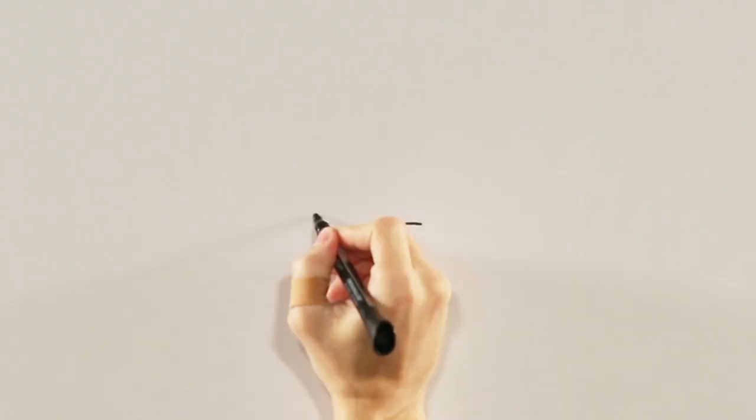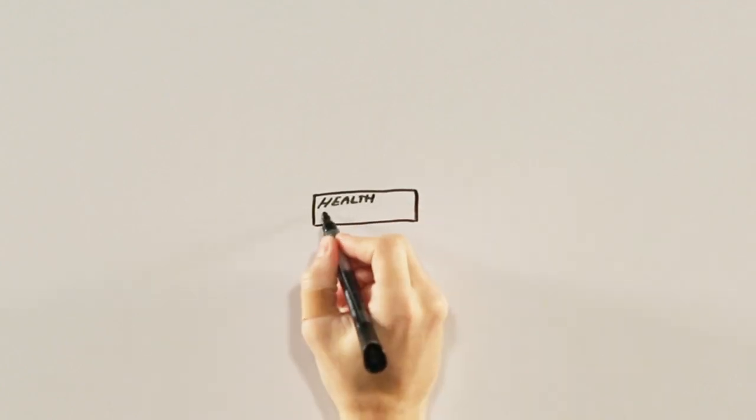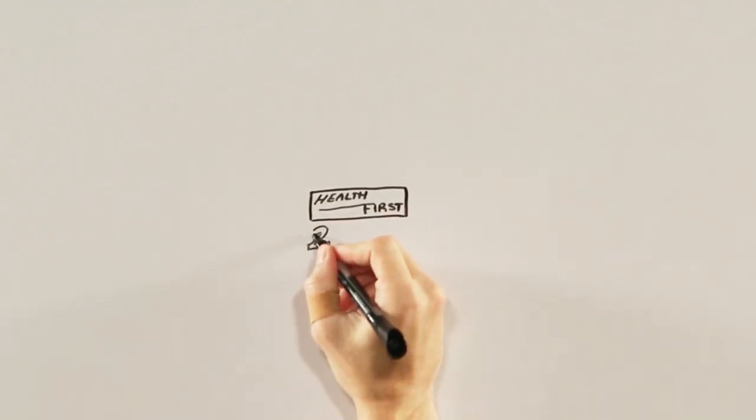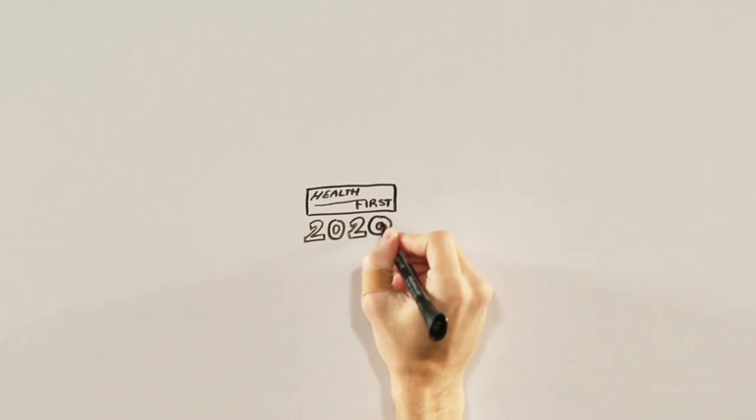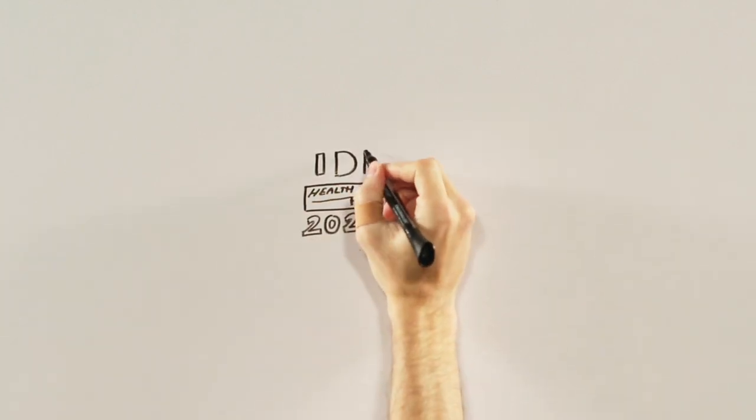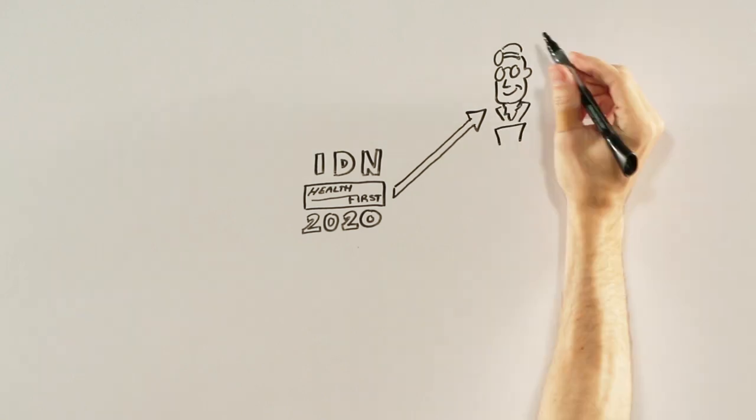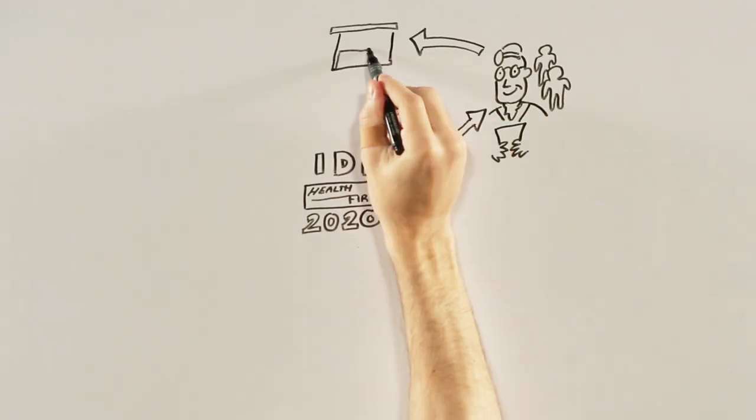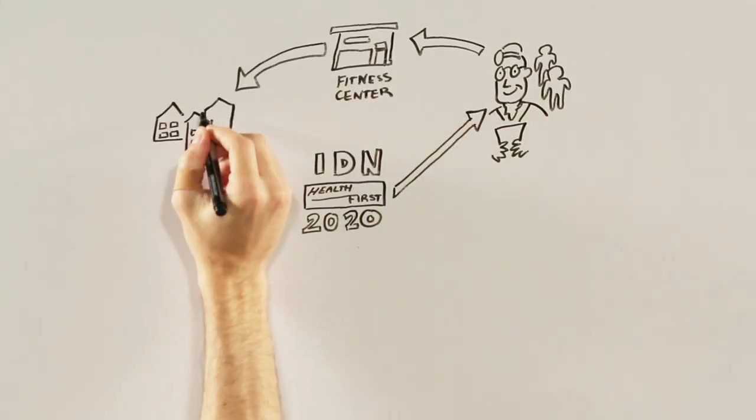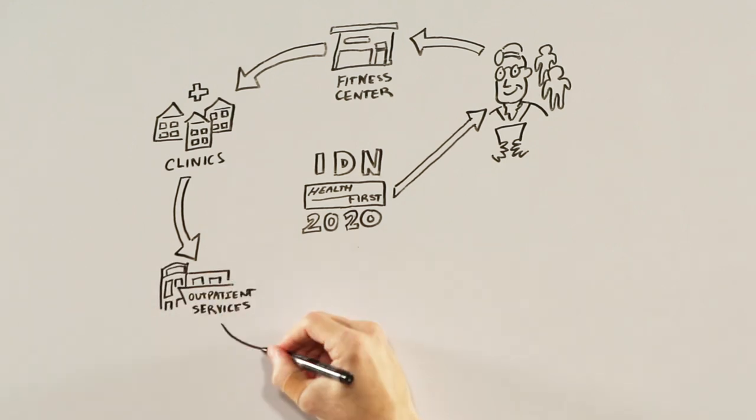The guiding principle of Health First 2020 is to link healthcare and prevention services into a seamless continuum of care. This is called an integrated delivery network or IDN. The IDN links care services and providers like our physicians, fitness centers, clinics, outpatient services, urgent care centers, hospitals,